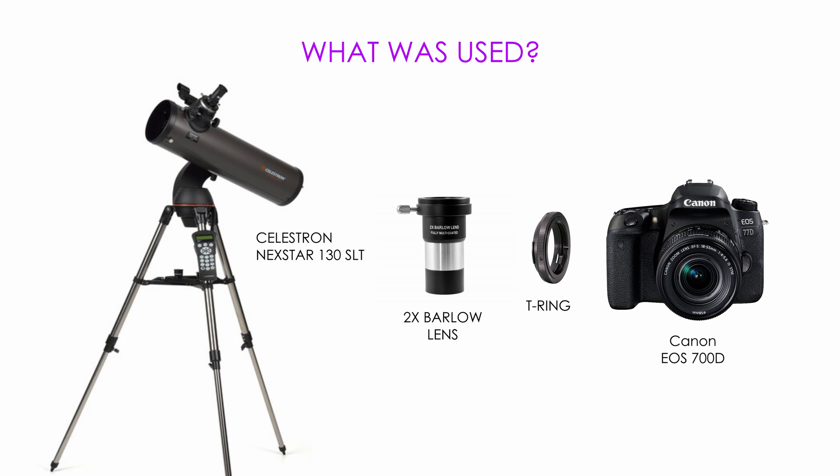The problem of using this was that the amount of light received was also reduced by the Barlow lens. But I had to use it, otherwise I would have to modify the telescope mirrors or buy a new camera.